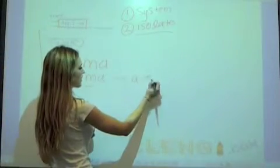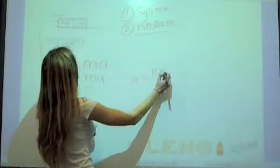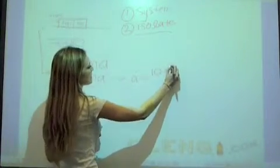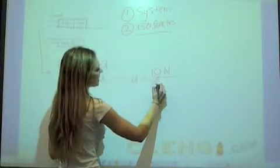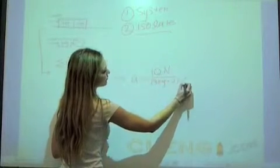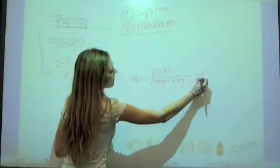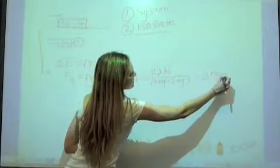So, the acceleration of both of these blocks is going to be equal to 10 newtons divided by 3 kilograms plus 2 kilograms. 10 divided by 5 is going to be equal to 2 meters per second squared.